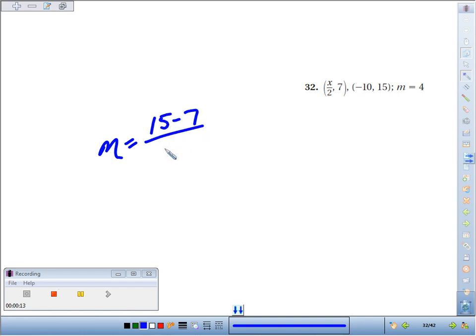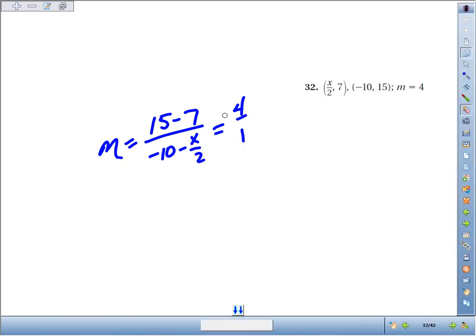over x minus x, which would be negative 10 minus x over 2. So this is my slope, but I know my slope is 4, which as a fraction is 4 over 1. Now I'm going to rewrite this a little bit. 15 minus 7 I could simplify that to just 8.